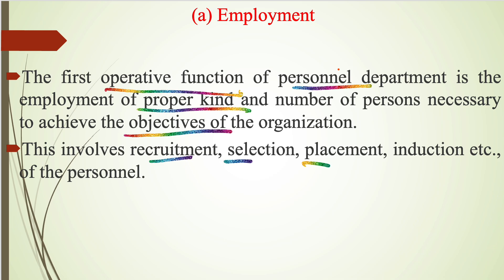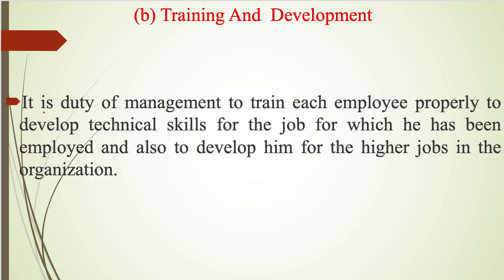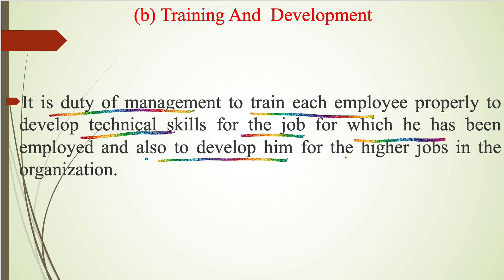The second operative function is training and development. It is the duty of management to train each employee properly to develop technical skills for the job for which he has been employed, and also to develop him for higher jobs in the organization. Employees are provided different types of training according to the requirements of the job, as well as development of their skills to attain better or higher positions.